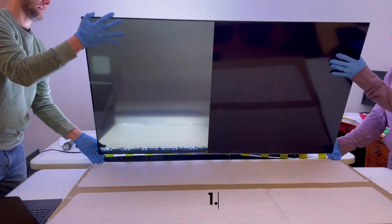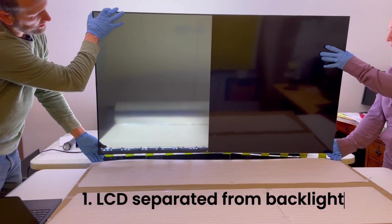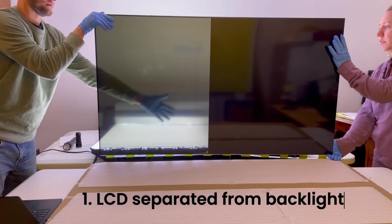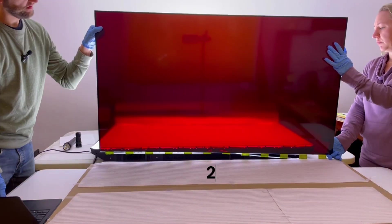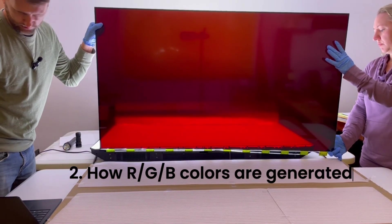In today's installment of my TV teardown, I separate completely an LCD from the backlight and keep it operational. So we can actually put content on this while the LCD is separated, and we're going to look at the colors and where these colors come from in the TV.